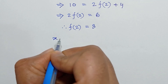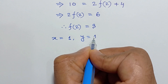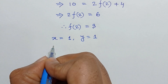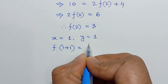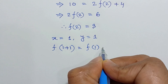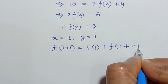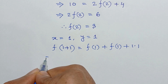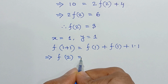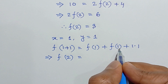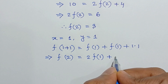Now substituting x=1 and y=1 into our main function, we get f(1+1) = f(1) + f(1) + 1×1, or f(2) = 2·f(1) + 1.